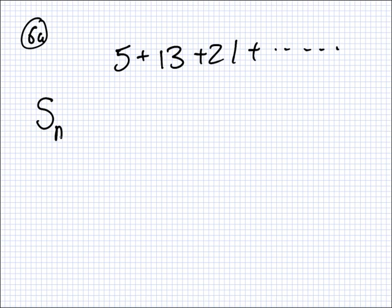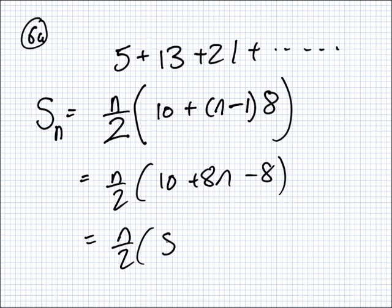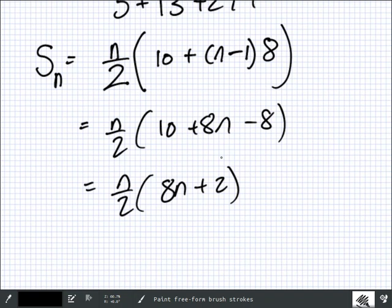6A. Now, I want the formula S_N for this one. Well, it's the same as the last one. It's just you don't know the N. So here, it's N over 2. You don't know the N. 2A. What's 2A here? 10. Plus N minus 1, which is N minus 1. And what's the D here? It's 8.